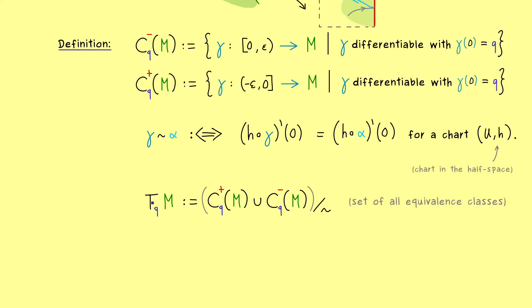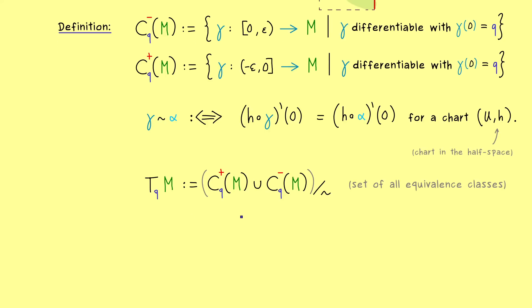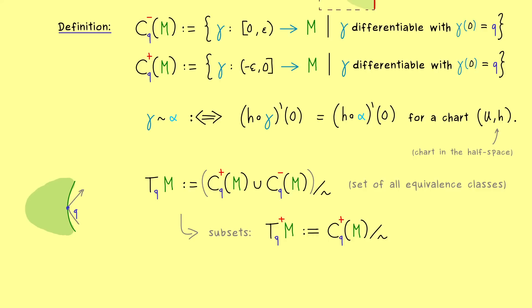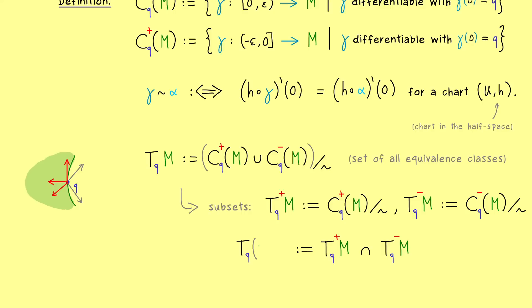This is the standard definition of the tangent space, but now we can also consider subsets of that. For example, TqM⁺ when we only consider curves that end at point q — in our picture, these are the tangent vectors that point outwards from the manifold. On the other hand, with the minus sign we have the curves that start at q, giving tangent vectors that point inwards. Obviously we also have tangent vectors that lie in both sets, namely the ones tangent to the boundary. The intersection of both subsets is not empty; in fact, this intersection is what we define as the tangent space of the boundary manifold.